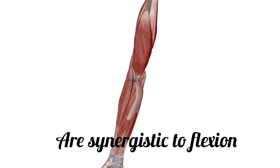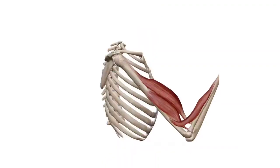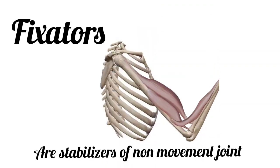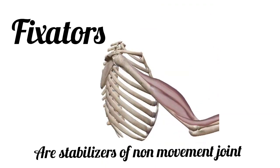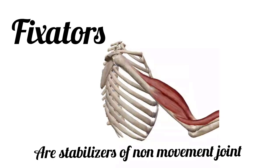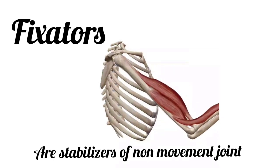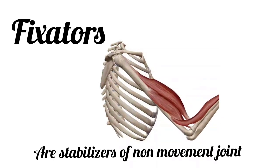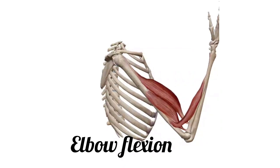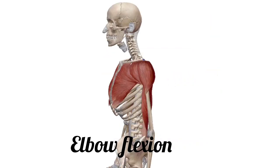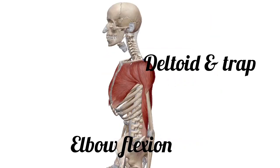The fourth type is fixators — muscles that serve as stabilizers of one part of the body during the movement of another part. For example, during elbow flexion, the shoulder muscles act as stabilizers or fixators of the shoulder joint.